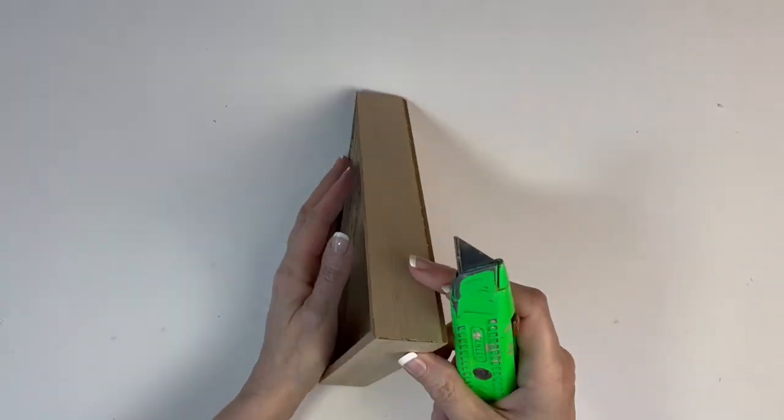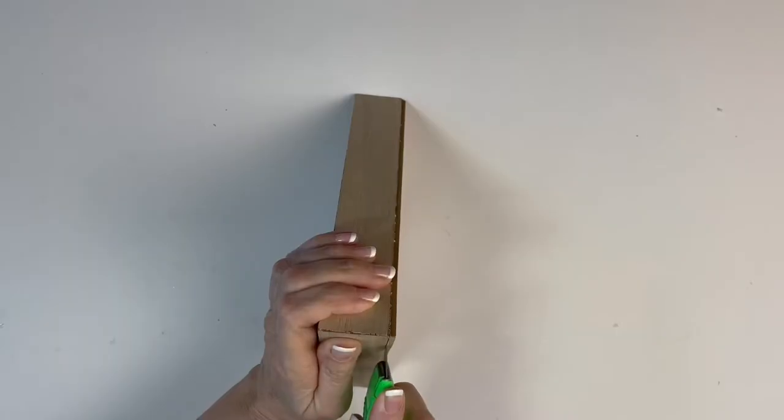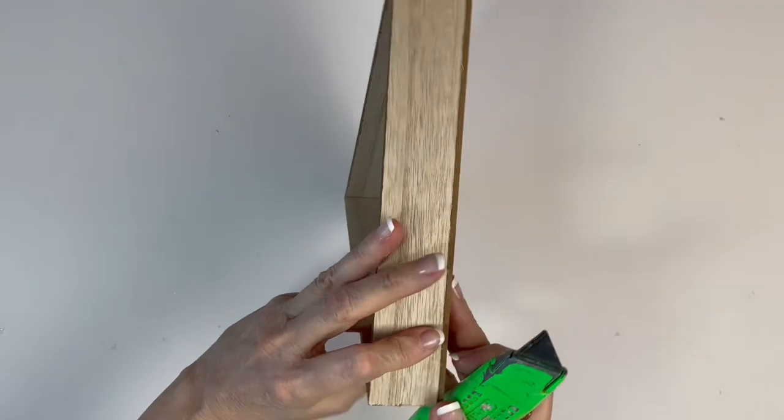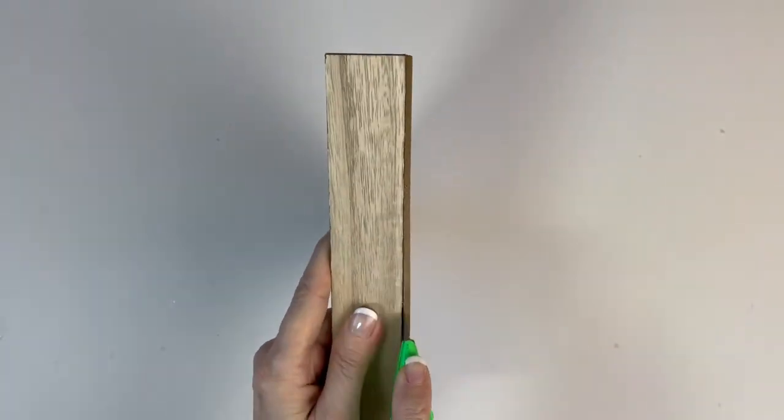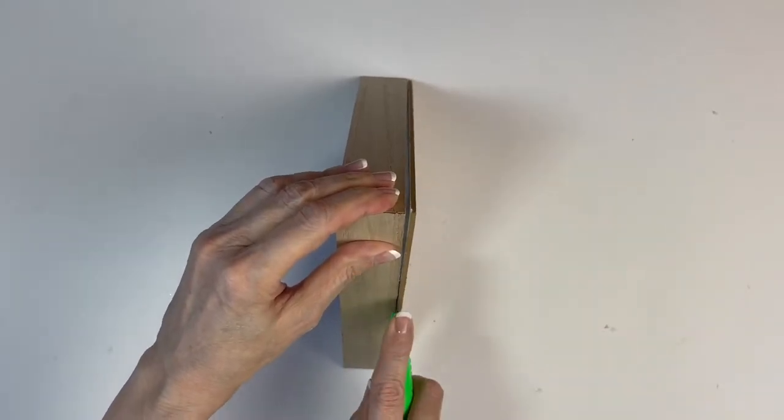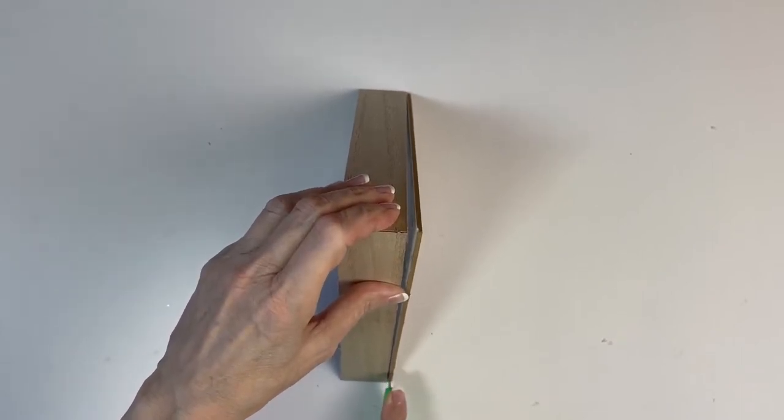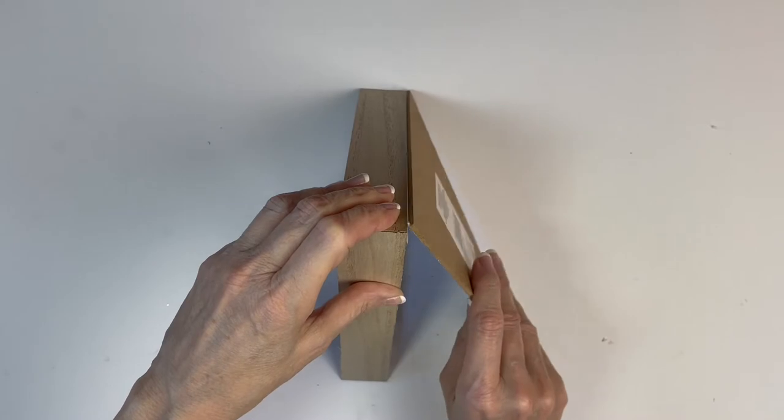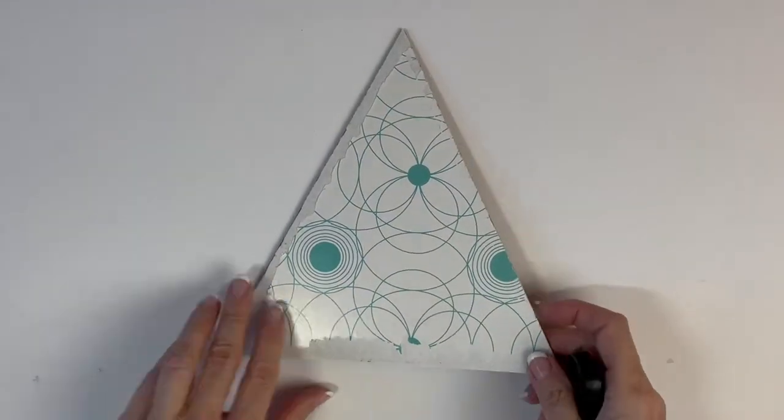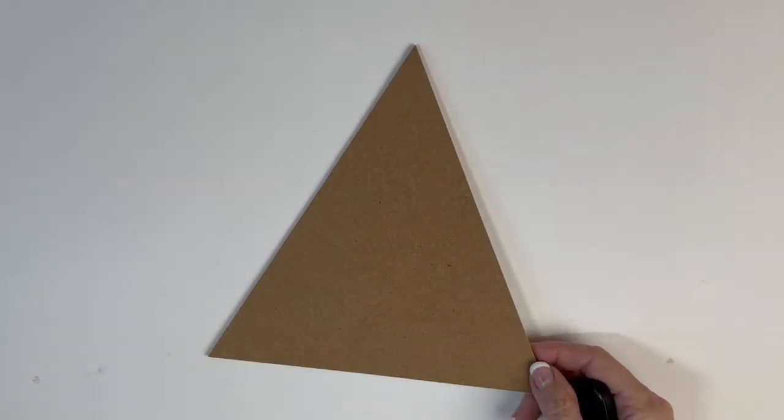Now we're going to remove the backside of the second frame to use as a backside on our luminary. Don't forget to remove that label. Paint the backside if you like. I did not.